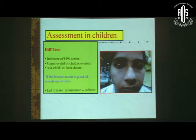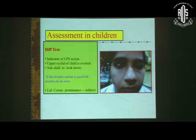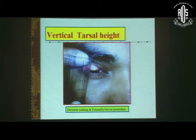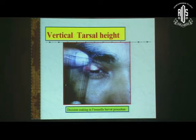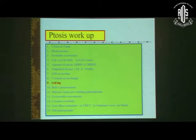The eye lift test is especially for children. If the levator action is good, the lid reverts on its own when we ask the patient to look up. Vertical tarsal height is another important factor for patients where we want to do fascial sling or Servo — the vertical tarsal height should be more than 8 mm for mild ptosis patients.